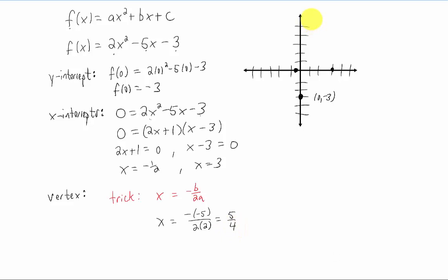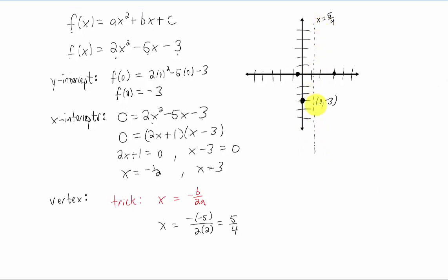Well, x equals 5 fourths, that's like a little bit bigger than one, so that's gonna be somewhere along this line right here. But how do we find what the y value is for this vertex? Well, what we have to do is we just have to plug this x value into the function to figure out what y is.